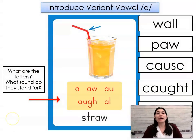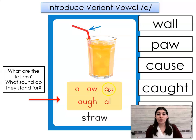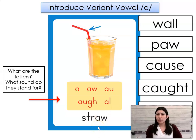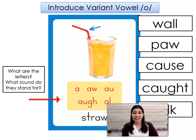There are many patterns that give us the AW sound: A, AW, AU, AUGH, and AL. Remember, we hear the AW sound in the word straw. You also hear the AW sound in the word wall, haw, cause, cot, and talk.